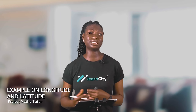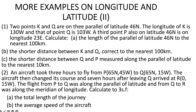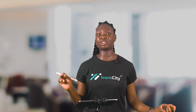Moving to the second example: an aircraft took three hours to fly from P to Q, where P is at 65°N, 45°W and Q is at 65°N, 15°W. The aircraft then changed course and, seven hours after leaving Q, arrived at R at 0°, 15°W. The flight from P to Q was along the parallel of latitude, and from Q to R was along the meridian of longitude. We need to calculate, correct to three significant figures, the total length of the journey and the average speed of the aircraft.